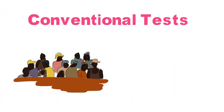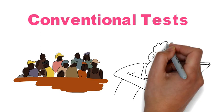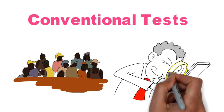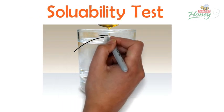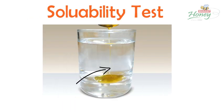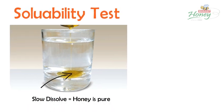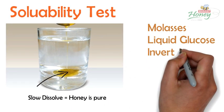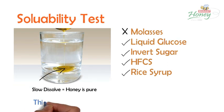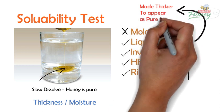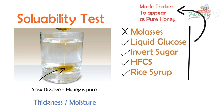Now let's discuss a few conventional tests which people have been using for ages to identify the purity of honey. The most popular is the solubility test, in which honey is made to fall slowly in a glass of water. If honey reaches the bottom and dissolves slowly, it is considered pure. However, except for molasses, all other adulterants behave in the same manner as pure honey, since solubility depends on thickness. The adulterants are deliberately made thicker to appear like pure honey, so this test is misleading.